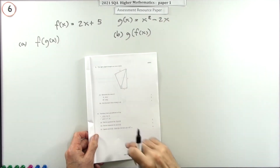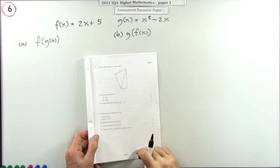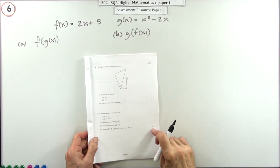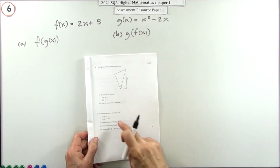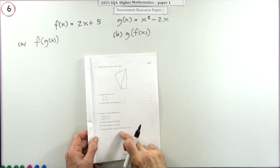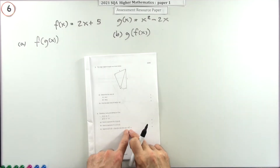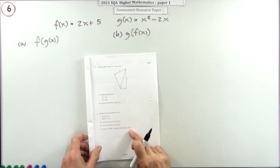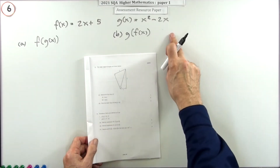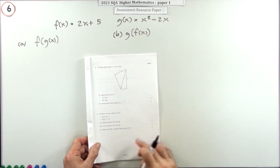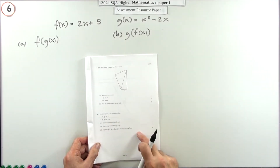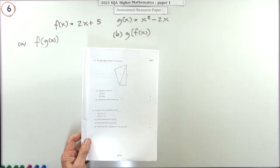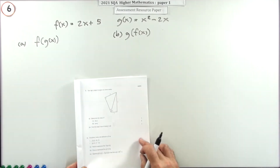Number six from paper one of the 2021 Higher Maths resource paper — seven marks. This question involves functions of a function, leading on to completing the square. They've done that before. The first part is going to produce some quadratic expression, and then in the last part you've got to form it into a completed square.